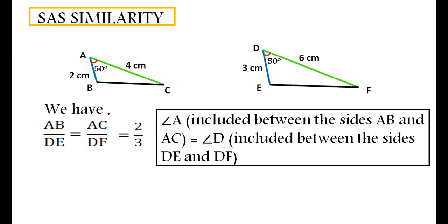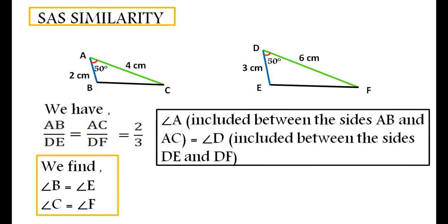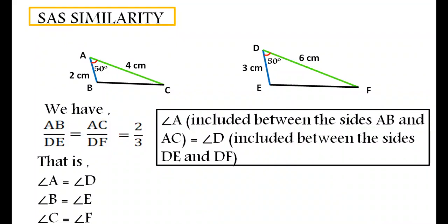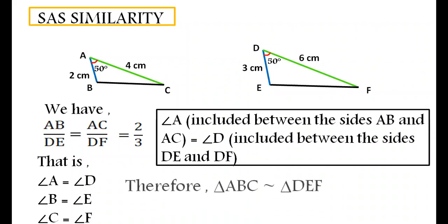If we measure angle B, angle C, angle E, and angle F, we come to know that angle B is equal to angle E and angle C is equal to angle F. That is, angle A equals angle D, angle B equals angle E, and angle C equals angle F. That means, if one angle of a triangle is equal to one angle of the other triangle and the sides including these angles are proportional, then the two triangles are similar. Here, triangle ABC is similar to triangle DEF by side-angle-side similarity.